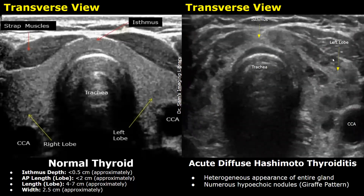This is another case of Hashimoto's thyroiditis in the acute stage. There is a heterogeneous appearance of the entire gland, and you can see numerous hypoechoic nodules inside the thyroid. This type of appearance is termed the 'giraffe pattern' because it resembles the pattern of a giraffe's hide.